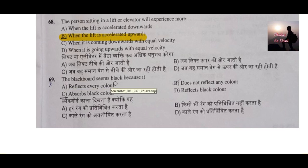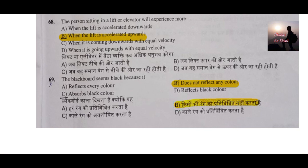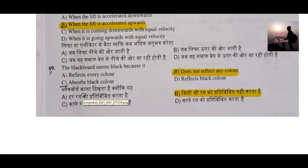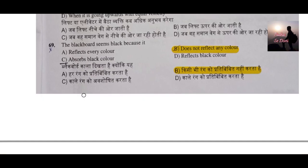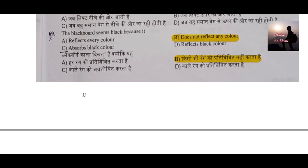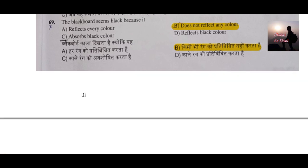Question number 69: The blackboard seems black because of what? The blackboard appears black because it does not reflect light. A perfect blackboard behaves like an ideal black body, which is a hypothetical ideal condition — actual black bodies are not exactly ideal black bodies.